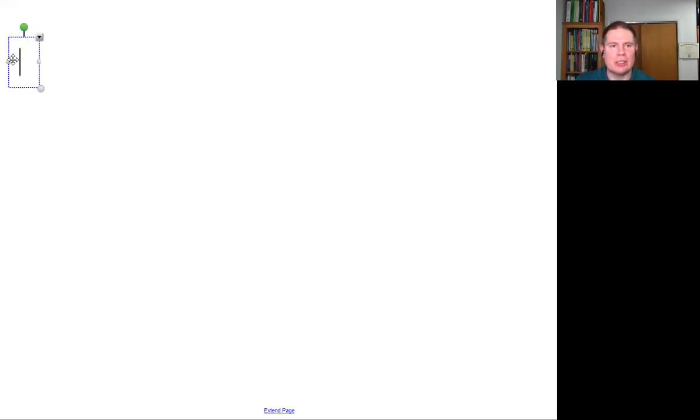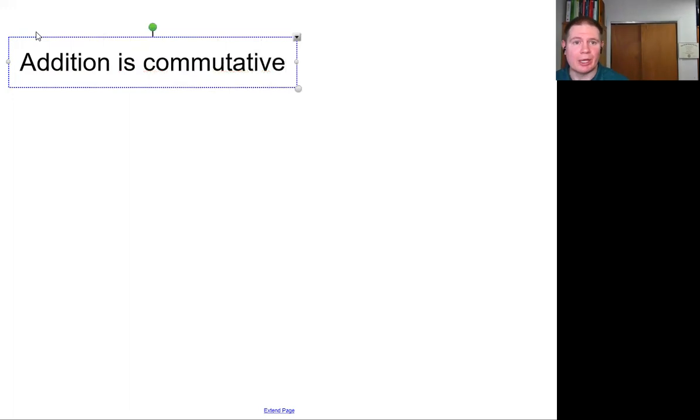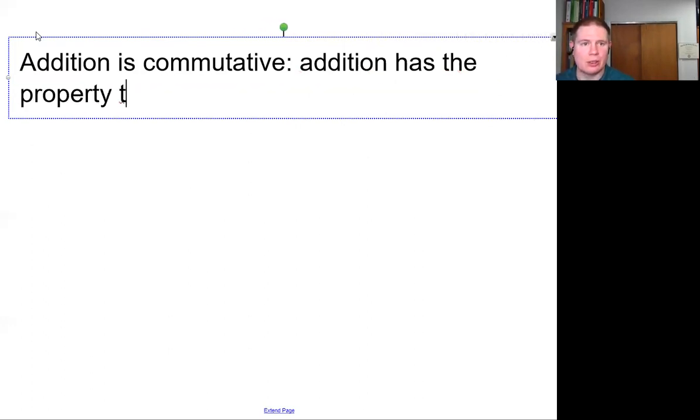In math, we say that addition is commutative. And now we're using commute in its adjective form. Commute can be a verb or a noun, like your morning commute. Or the verb, I commute to work this morning. But commutative, that's an adjective. What do we mean when we say addition is commutative? Well, we can be fancy about it and say, addition has the property of being commutative. Right? We talk about commutative as something, an adjective that applies to addition.